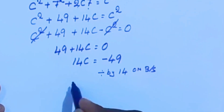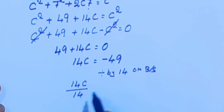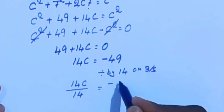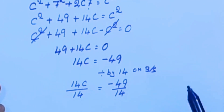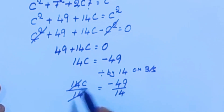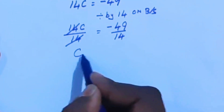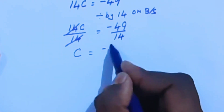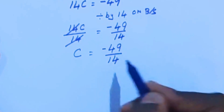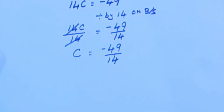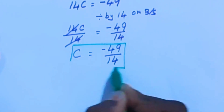Dividing both sides by 14: 14c ÷ 14 = −49 ÷ 14. The 14s cancel, so we have c = −49/14. This is the c value.